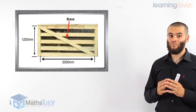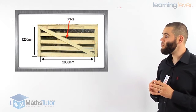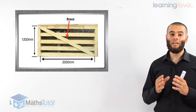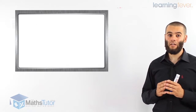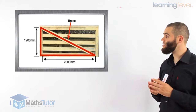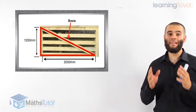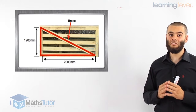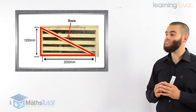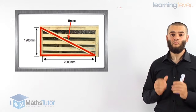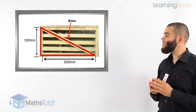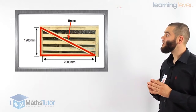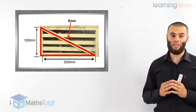What can you notice? You can notice that the diagonal, which is the brace, with the height and the length, make a right-angled triangle. So we use Pythagoras' theorem to find the length of the brace — so we can cut it to size and construct this gate. We are told that the height is 1,200 millimeters and the length is 2,000 millimeters.